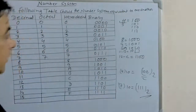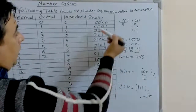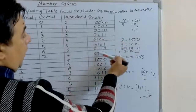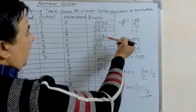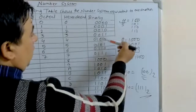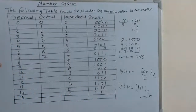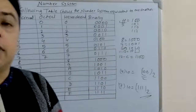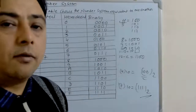Another method to draw the table: in the first column, there are 8 zeros then 8 ones; in the second column, 4 zeros then 4 ones repeating; in the third column, 2 zeros then 2 ones repeating; and the last column alternates 0 and 1. In this way we can also draw the binary table. This table shows the number systems equivalent to each other, making it very easy to know the binary number system.